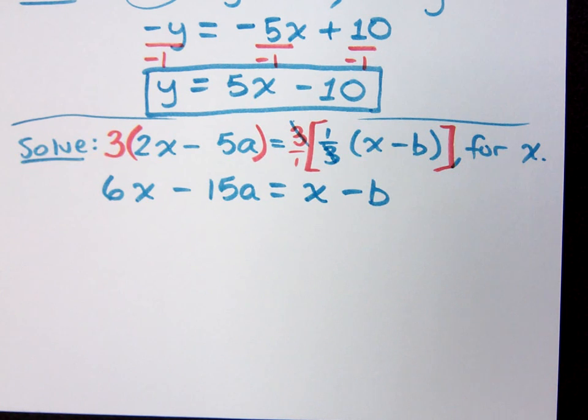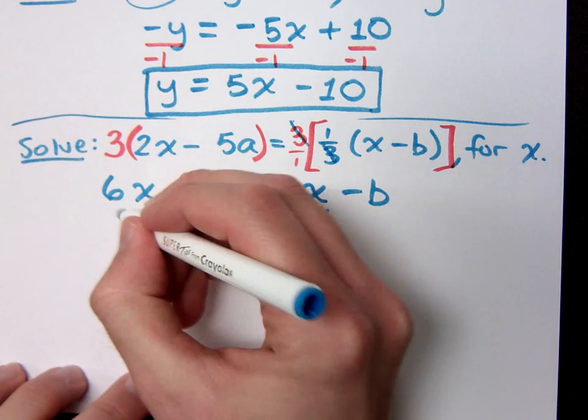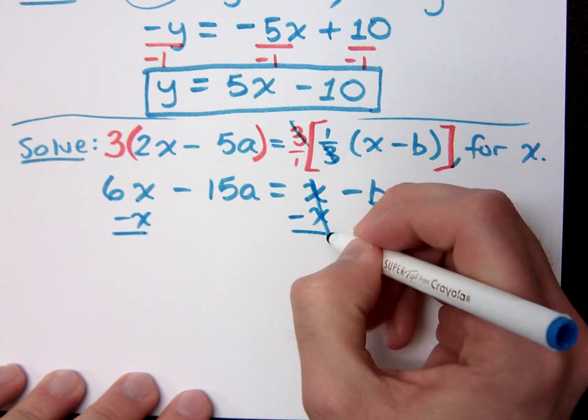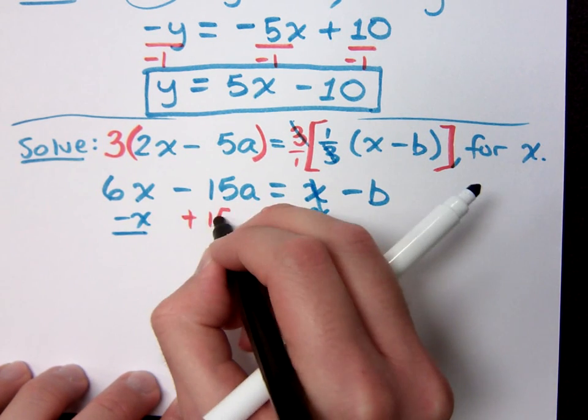That means everybody that has an x, you get them on one side. If you don't have an x, you go to the other side. So what does that look like here? I'm going to subtract x. But what else can I do here at the same time? Move the 15a to the other side.